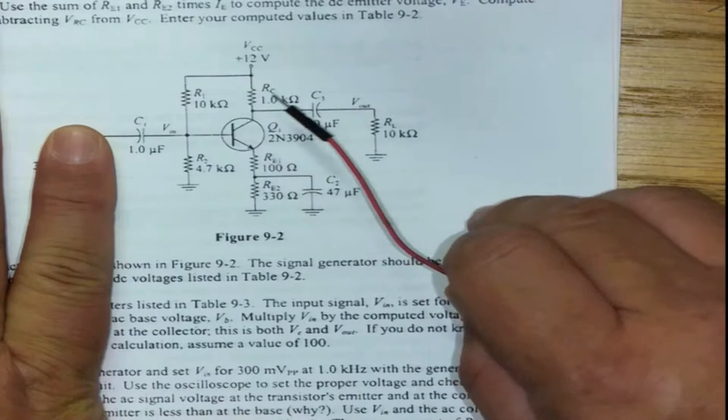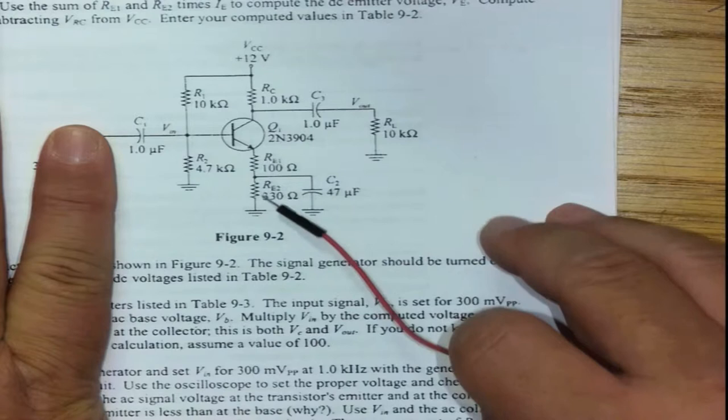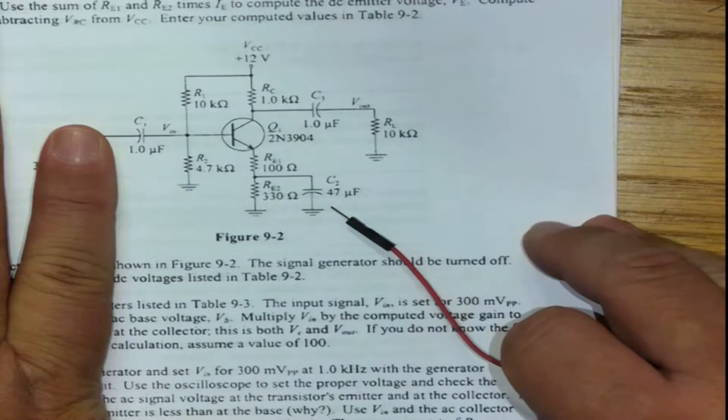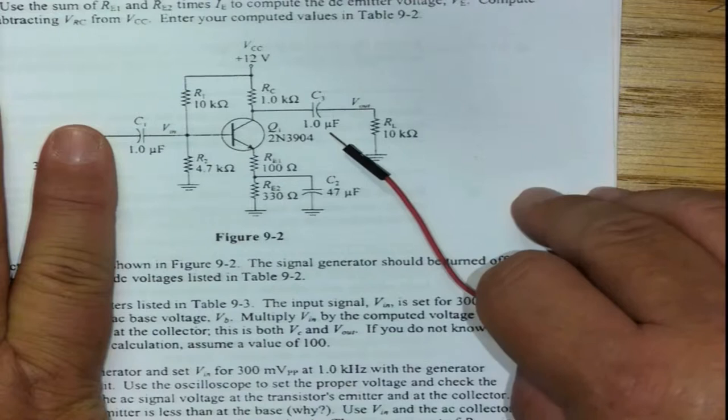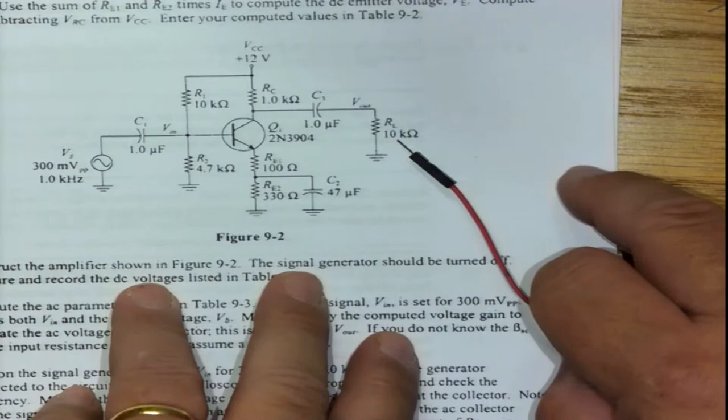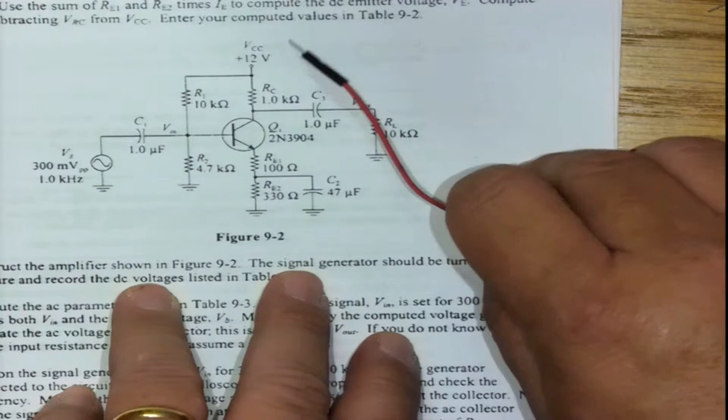We have a transistor. You've got R1, R2, RC which is your collector resistor, and then RE is split into two, RE1 and RE2 with a bypass capacitor here C2 on the emitter side. The output of the transistor goes through C3 and that is presented to a load resistor. So that's the circuit.